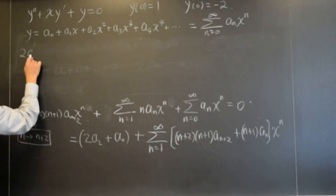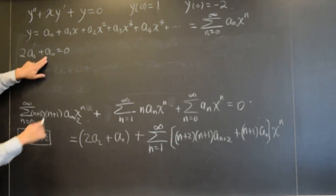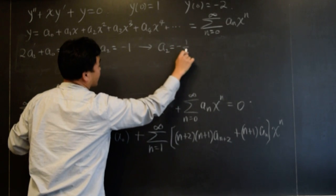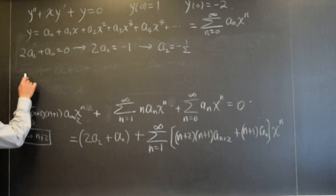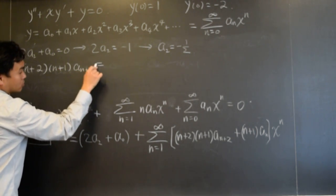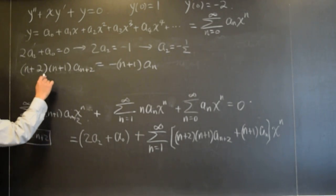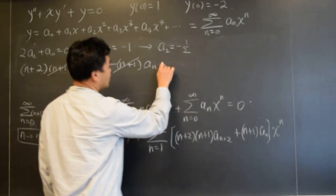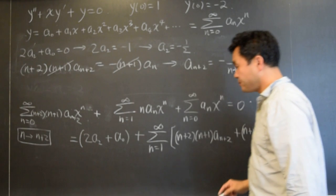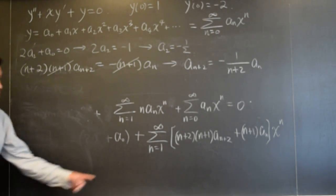So what we're getting is that two a two plus a zero is zero. But we just figured out that a zero is what? One. So that means two a two is, if I move the one to the other side, it's negative one. So a two is negative one half. And then the recurrence relation is a n plus two equals, if I move this to the other side, negative n plus one, a n. And if I cancel these two and divide this over, I get a n plus two equals negative one over n plus two times a n. And that's valid for n greater or equal to what? One, it's here, right?